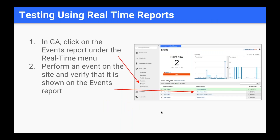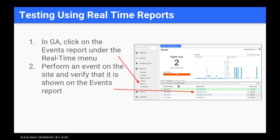That, along with using real-time reports in Google Analytics, is how we often validate web implementations. Real-time reports show both page views and events happening in real time — limited to a few attributes, but a good starting point. You can see yourself as you click around your particular site to validate the tracking is set up properly.